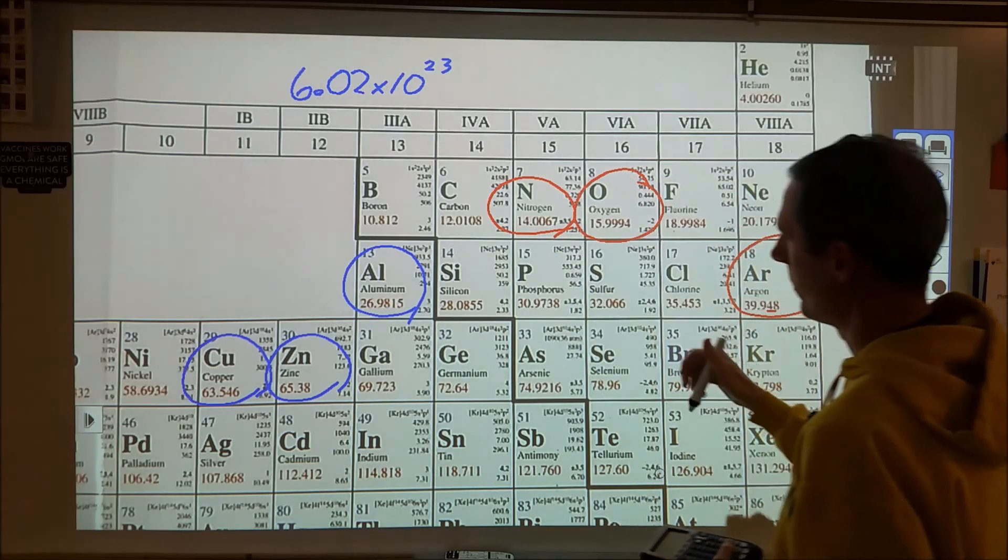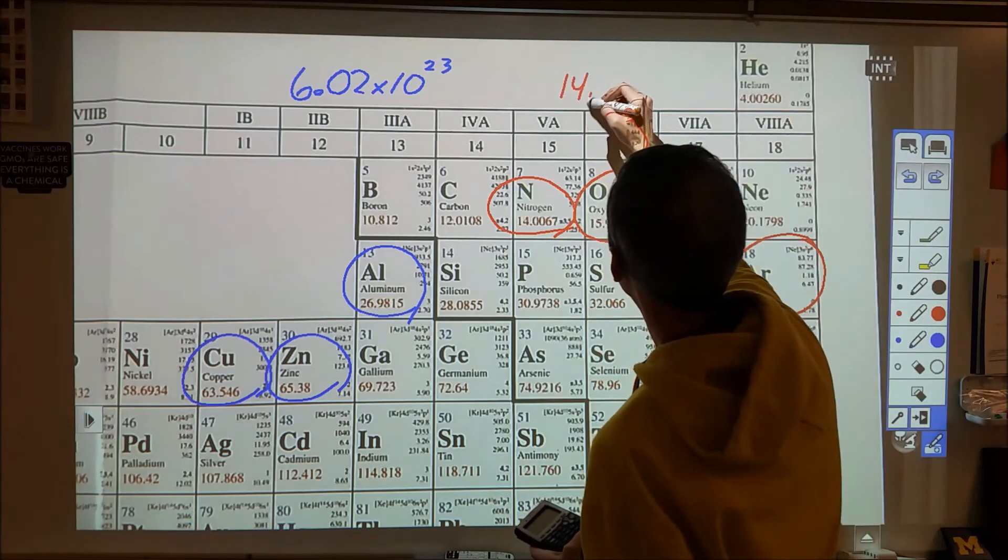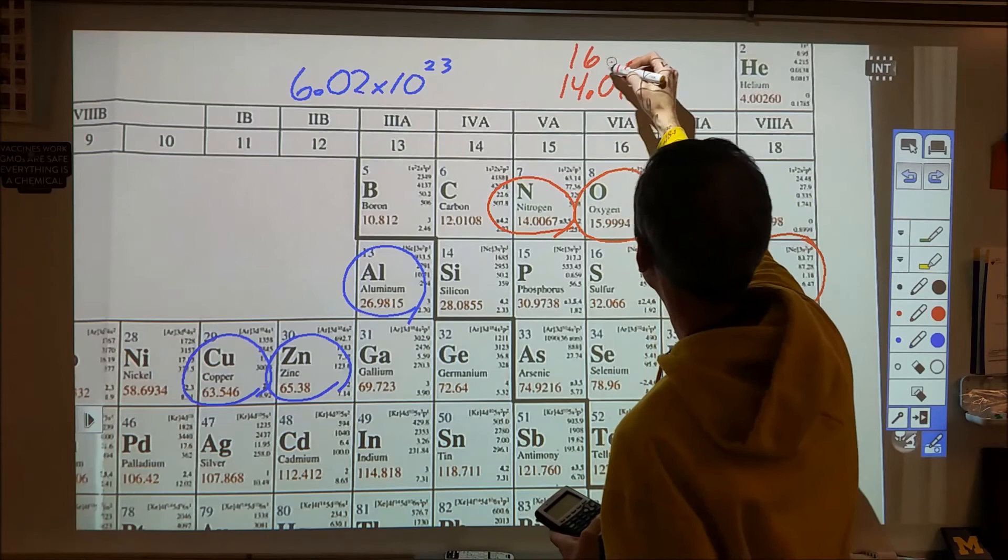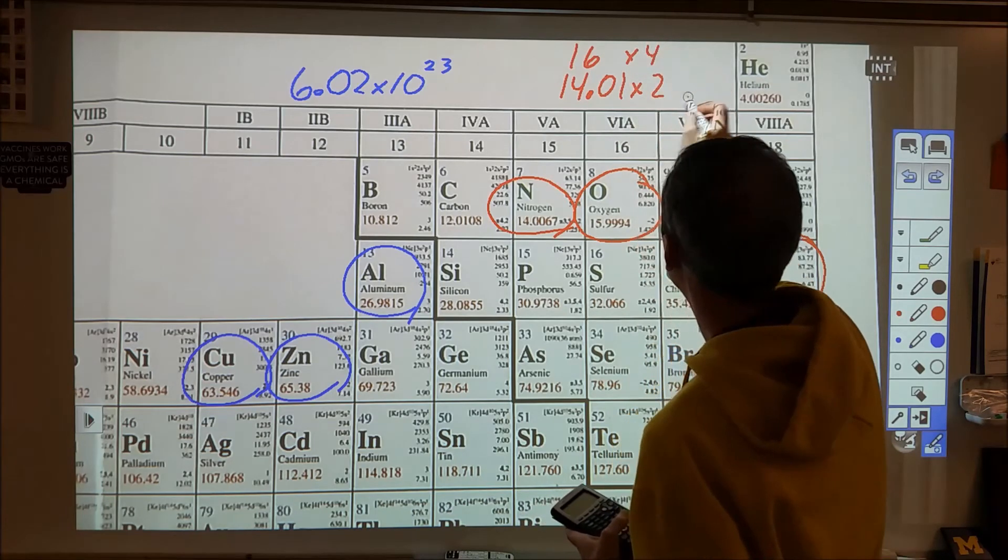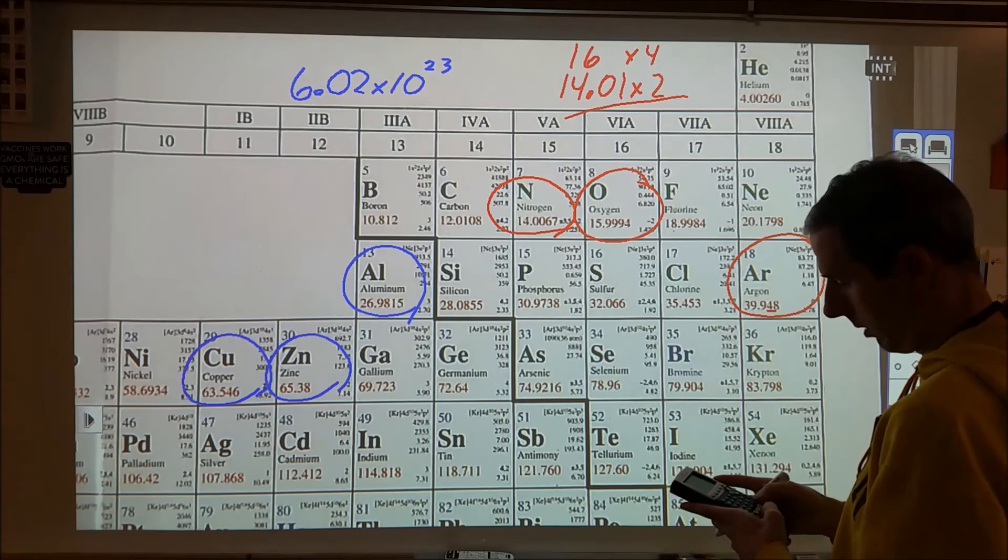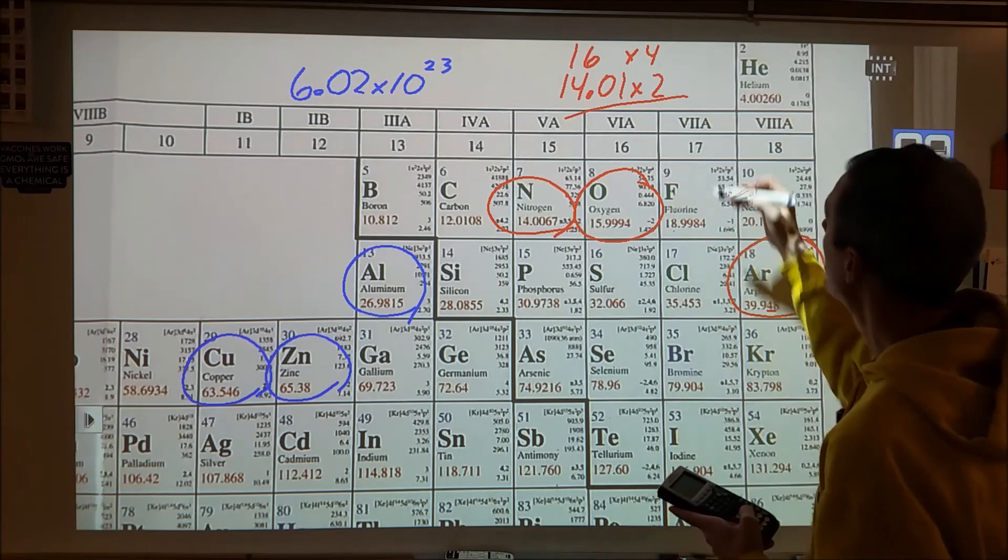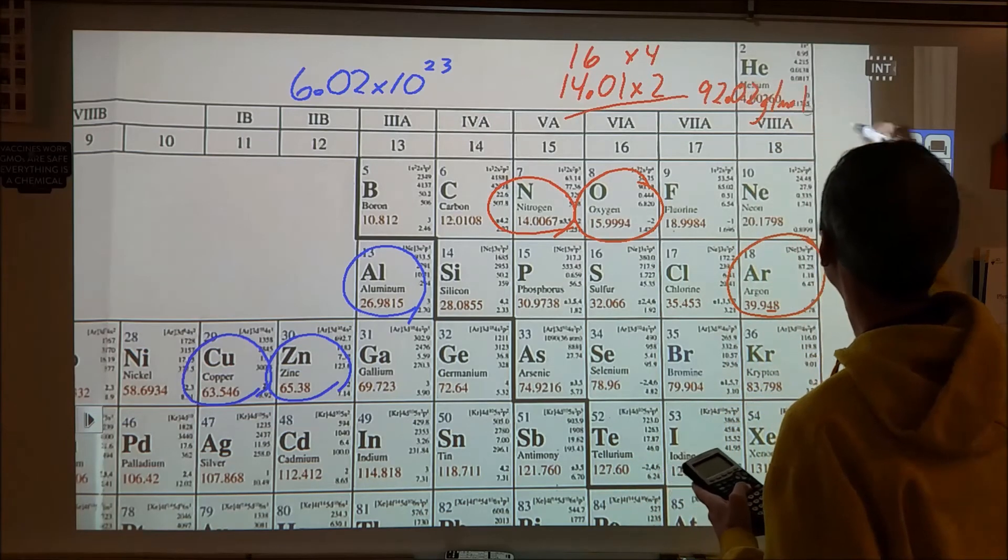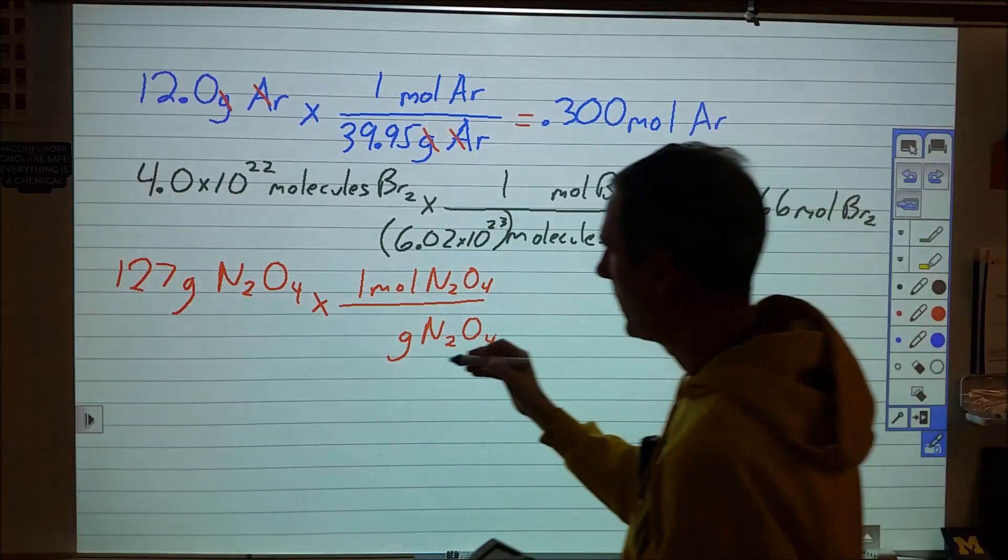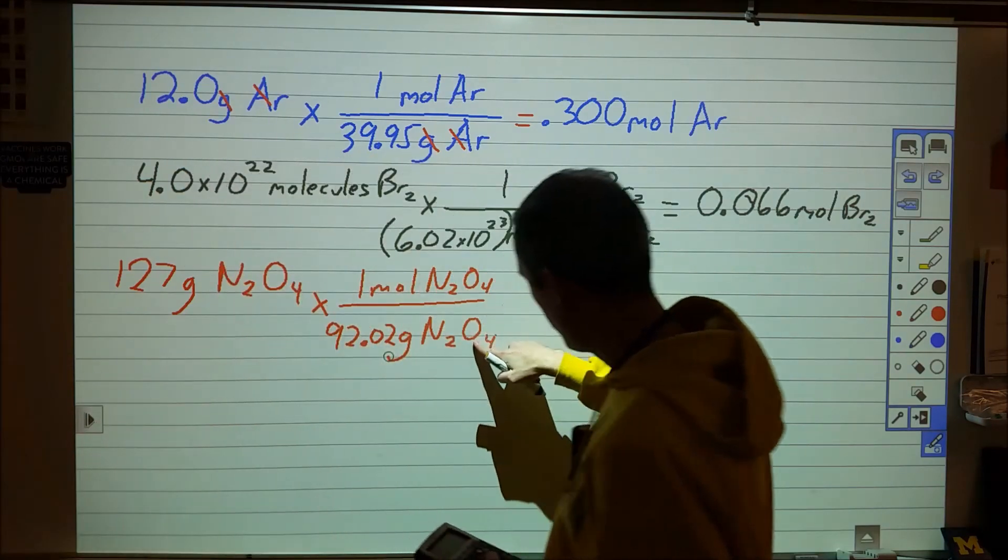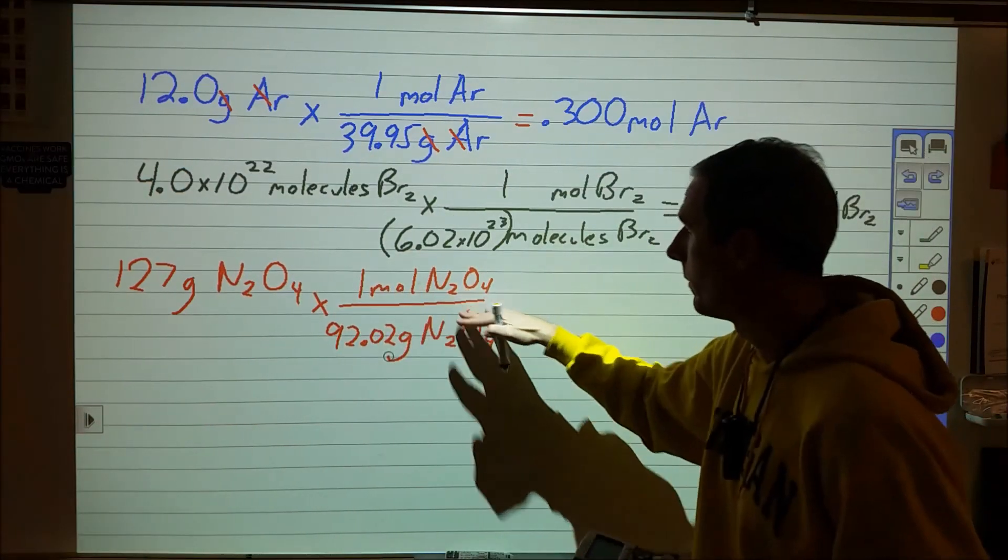So we need two of these, four of those. So we've got 14.01 times 2, and then we've got 16.00 times 4. We're going to add all of that up. And that comes out to be 92.02 grams per mole.